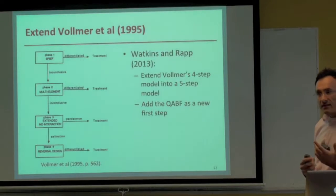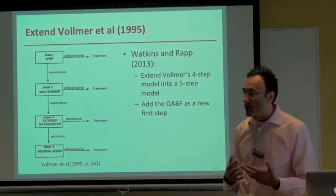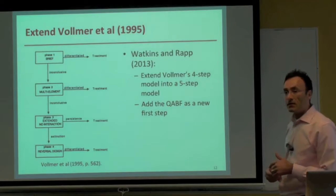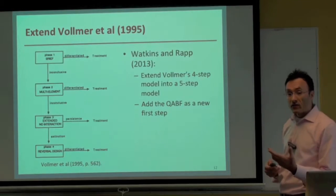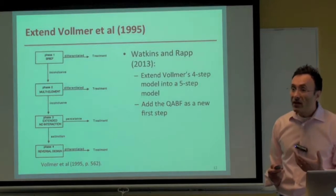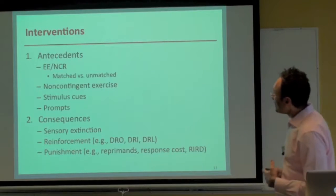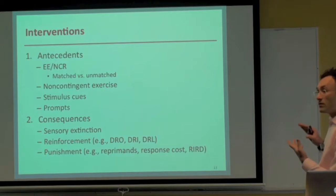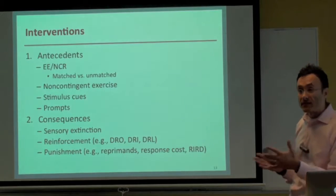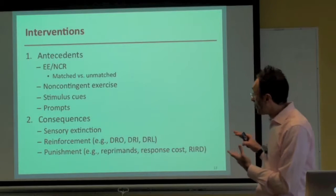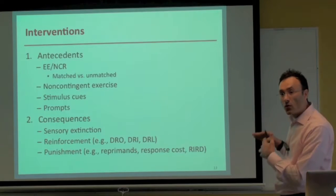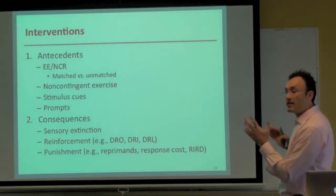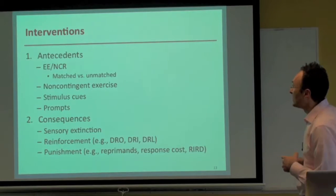For assessing stereotypy, we can use the QABF or functional analysis methodology. Once we've confirmed automatic reinforcement, then we look to interventions. Interventions can be grouped into two camps: antecedent interventions — events that come before a behavior — and consequence interventions — events that happen after a behavior.